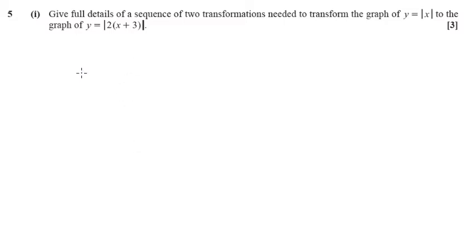Question 5 part 1 is a combined transformations question. It asks us to give the details of the transformation that takes y equals mod x to y equals mod 2 bracket x plus 3.